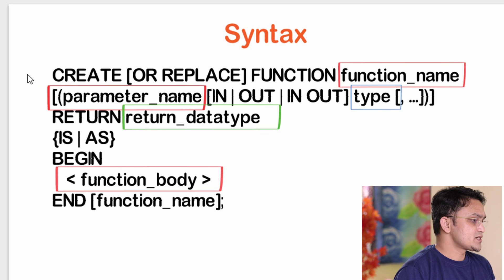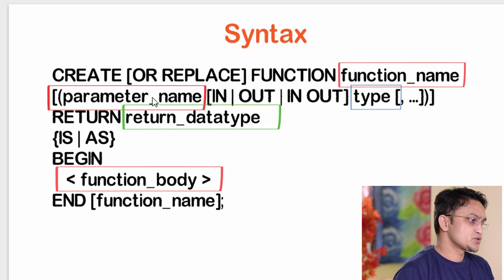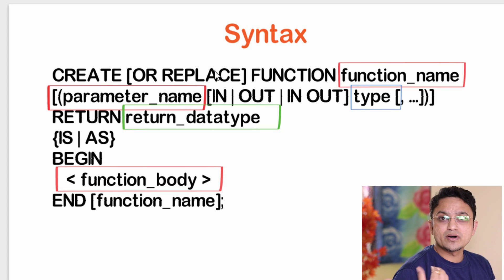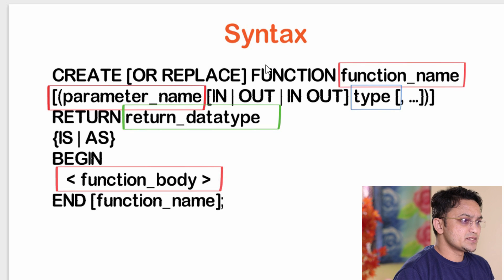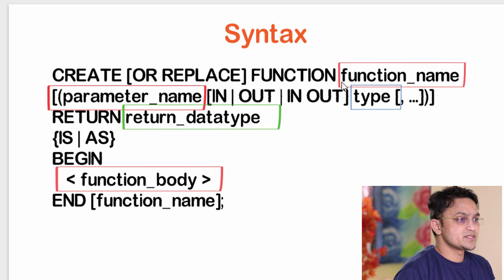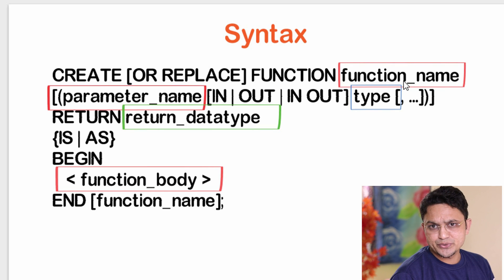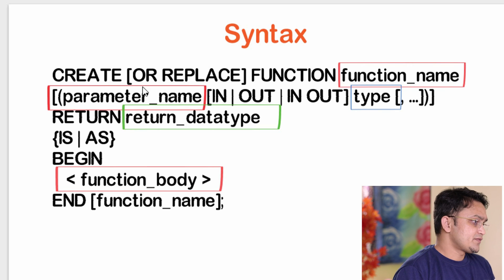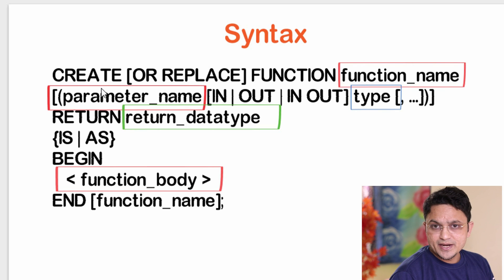Let's understand this syntax. The first line is CREATE OR REPLACE FUNCTION followed by the function name. This means: CREATE a function, REPLACE a function if one already exists with that name. The keyword FUNCTION tells Oracle this is a function — if I had written PROCEDURE instead, it would indicate a procedure. After that, you give the function name — whatever name you want.